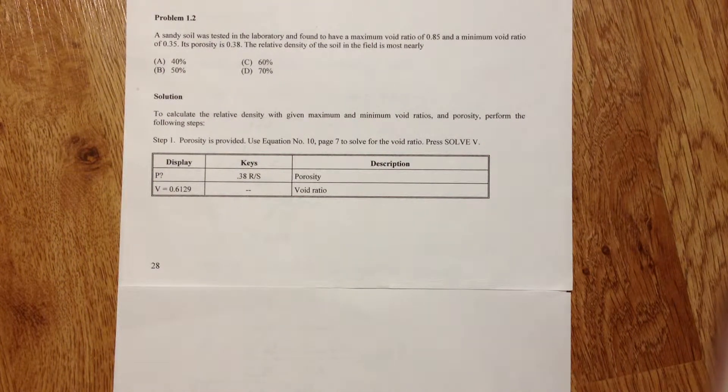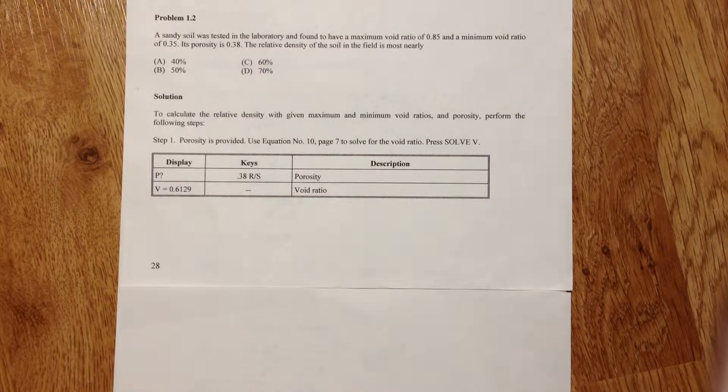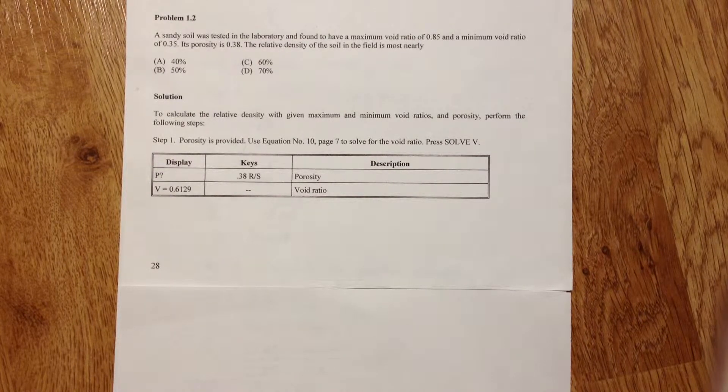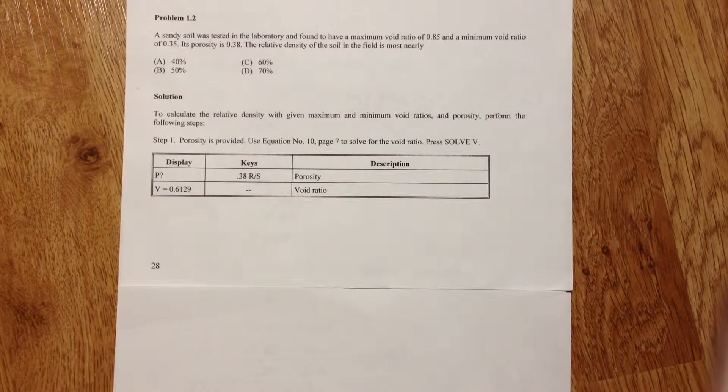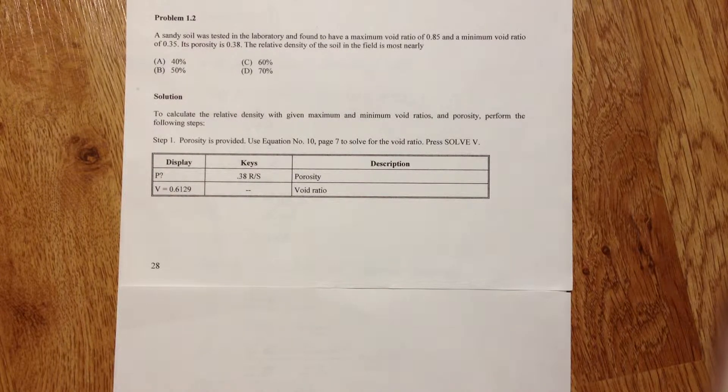I have another geotechnical sample problem here, problem 1.2 from my book. A sandy soil was tested in the laboratory and found to have a maximum void ratio of 0.85 and a minimum void ratio of 0.35.